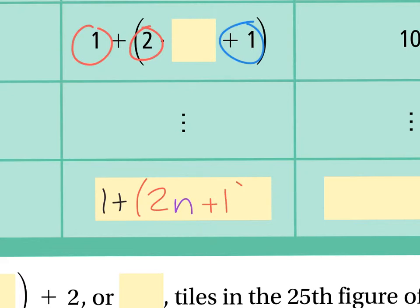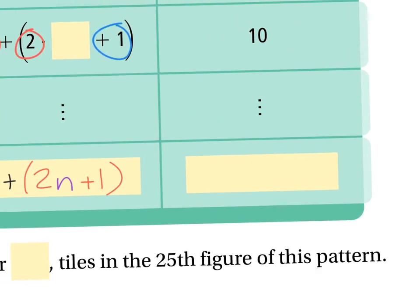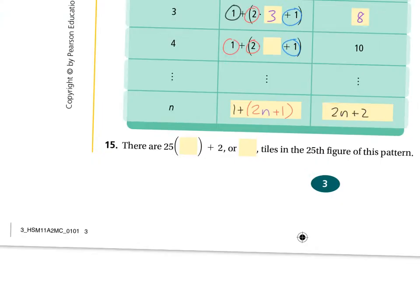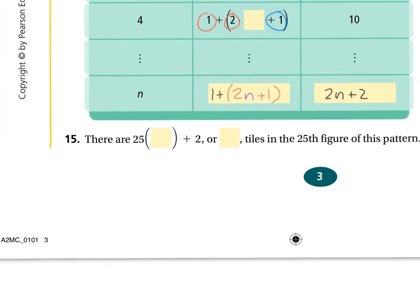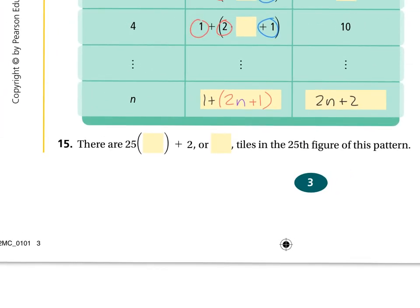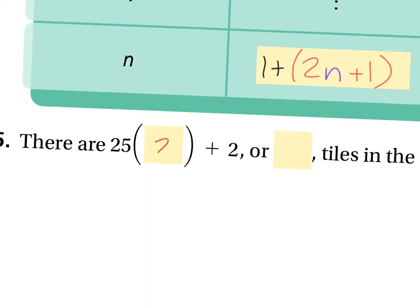Now if I were to clean that up a little bit, notice that the black one in the front and the red one in the end, those guys can be added together. So I can write it as a simple equation and it looks like this: 2n + 2. Now when we take number 15 there, it says there are 25. There are 25 2's plus 2. So this one here, there are 25 pairs plus 2, or when we add those together, a total of 52 here in the 25th pattern.